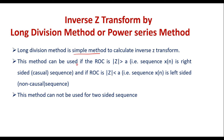This method can be used if the ROC is |Z| greater than some value A, which means the sequence X(n) is a right-sided or causal sequence. If the ROC is |Z| less than some value, then the sequence is a left-sided or non-causal sequence. However, the long division method is not applicable for two-sided sequences.